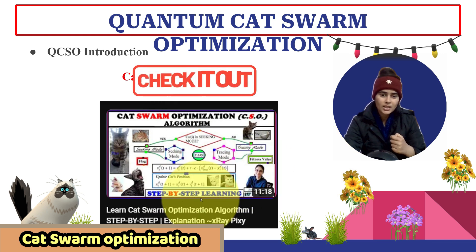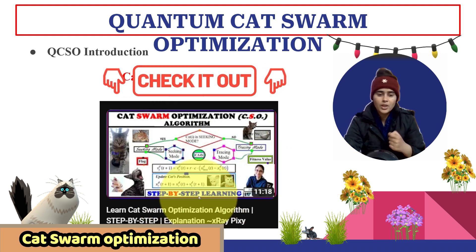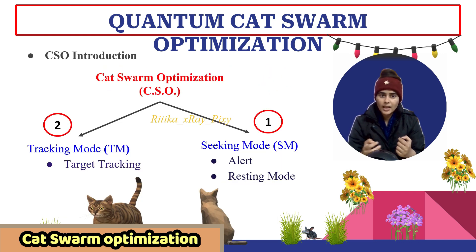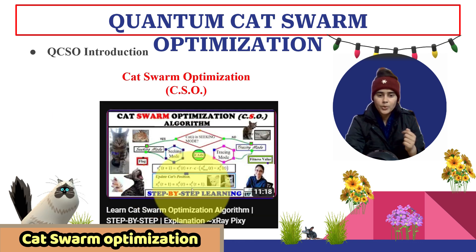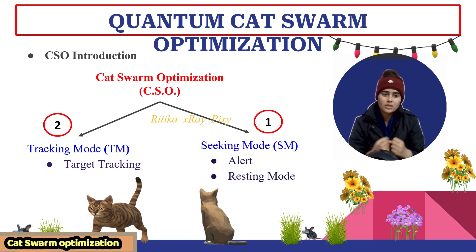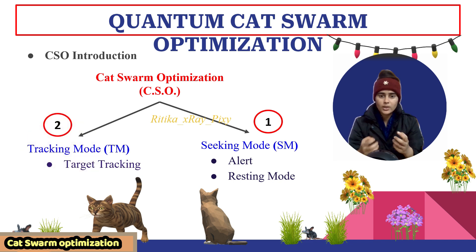First, you can see the cat swarm optimization algorithm, which we already discussed. For more details you can check that video — the link is given below in the description box. Cat swarm optimization algorithm is inspired by the cat's behavior in real life. Here you can see we have two modes: seeking mode and tracing mode.